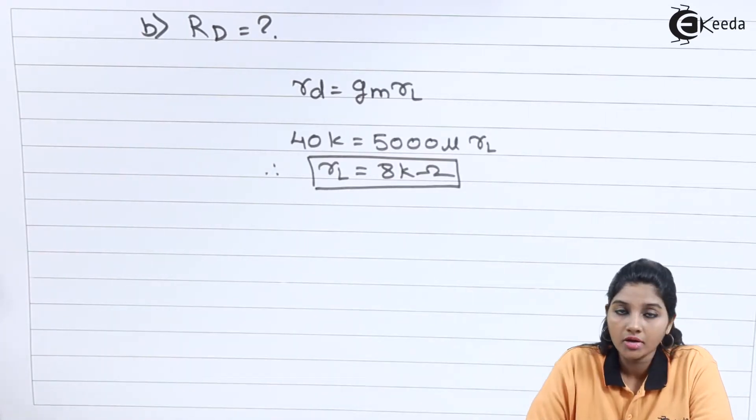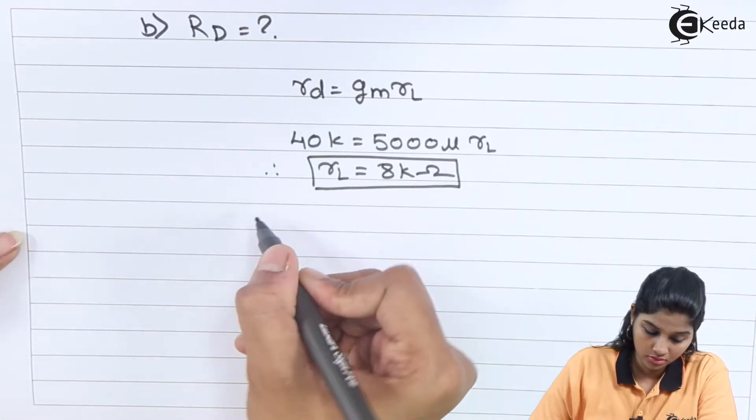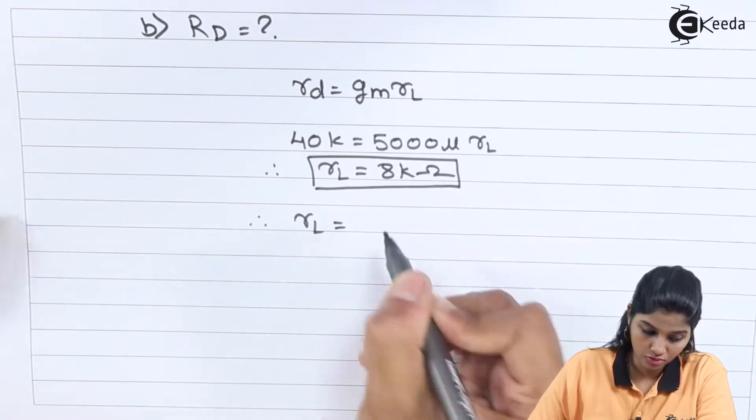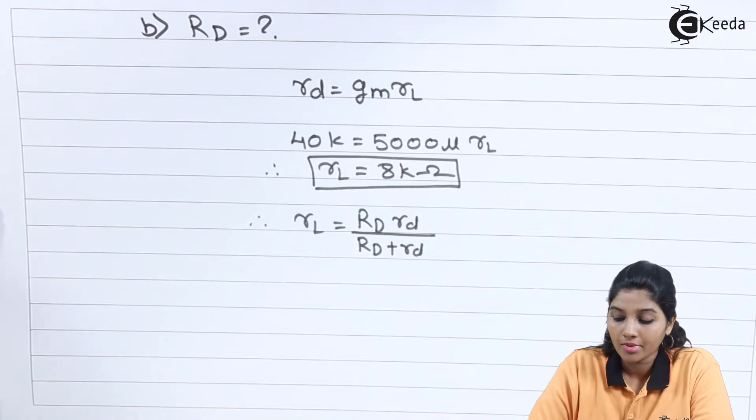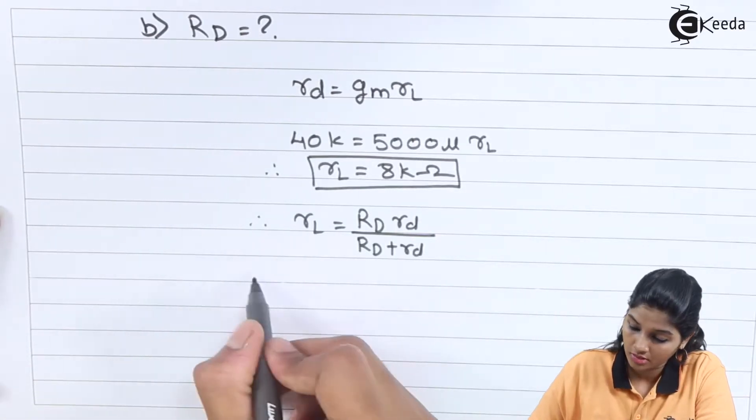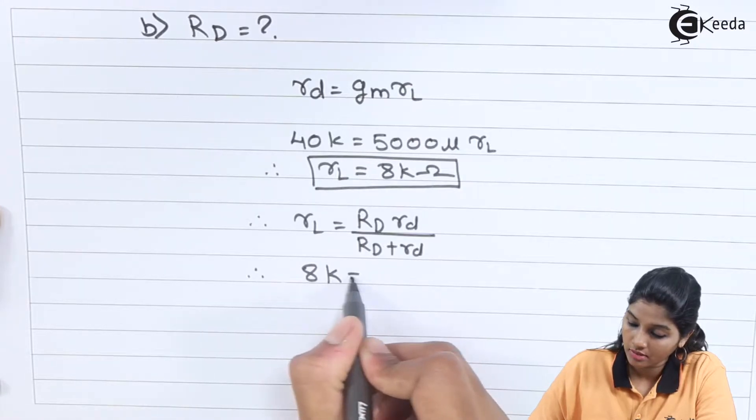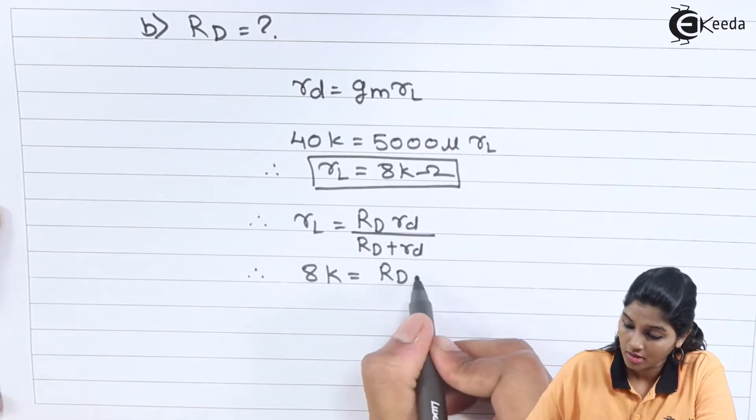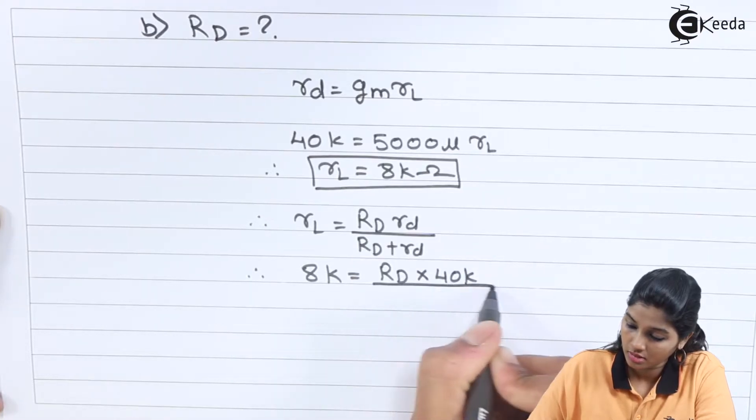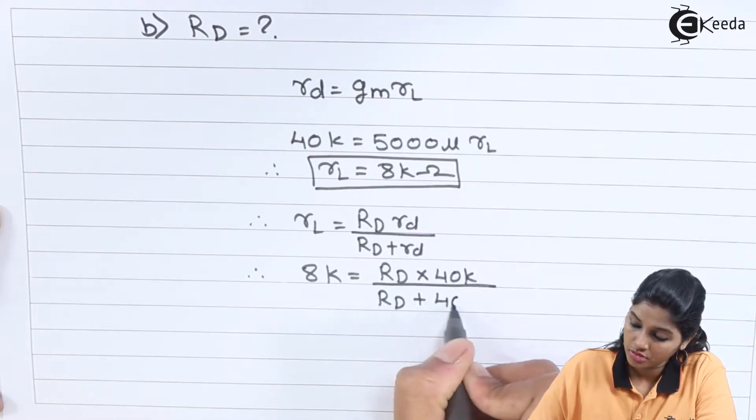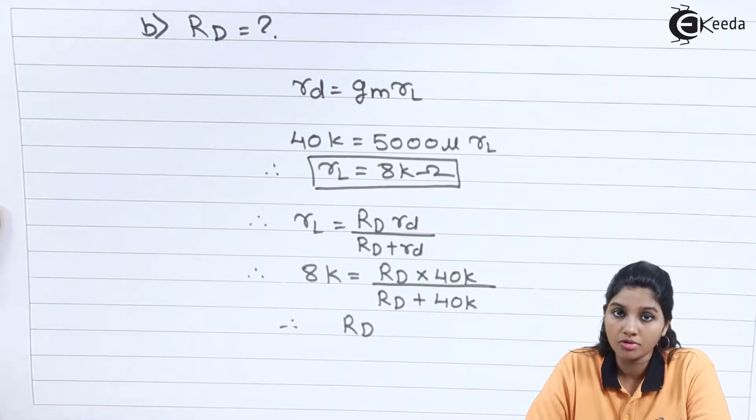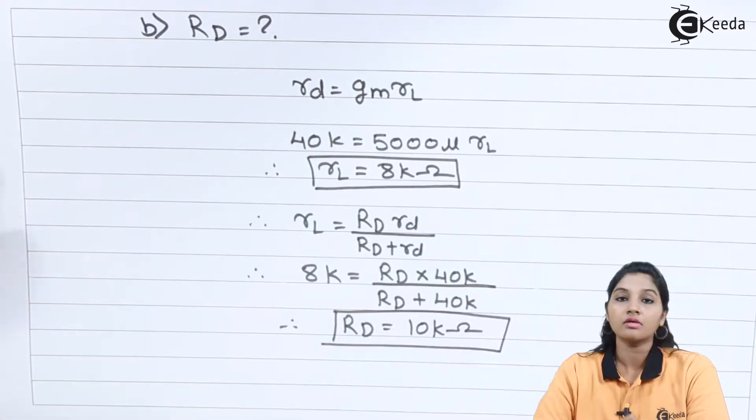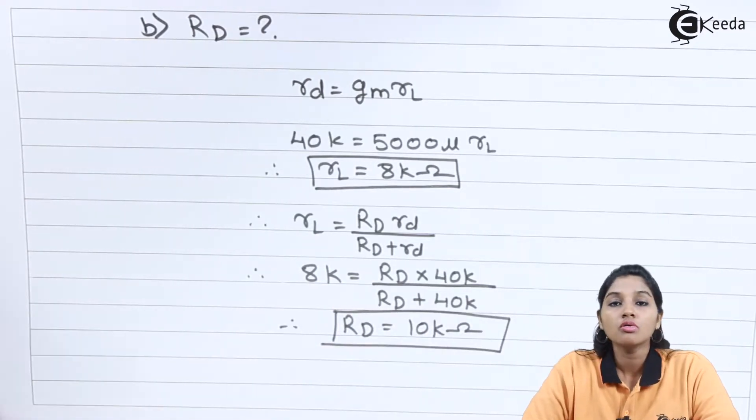Now with the help of this Rl, we can find out the value of drain resistance, that means capital RD. Therefore Rl equals to small RD into capital RD divided by capital RD plus small RD. 8 equals RD into 40K divided by RD plus 40K.